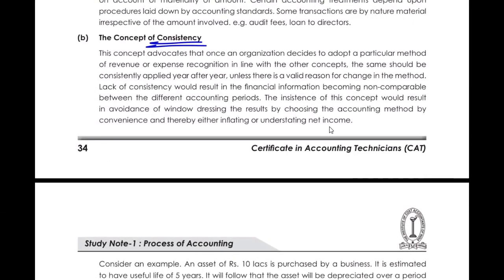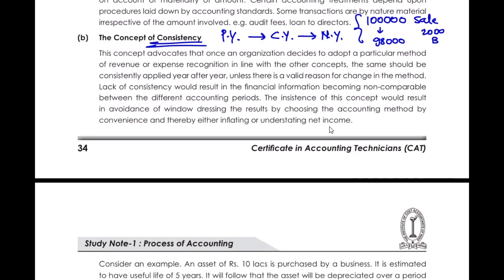The consistency concept says that whatever practice you followed in the previous year, you need to follow in the current year and the next year also. For example, from experience you always receive ₹98,000 from a sale of ₹1 lakh — so there is ₹2,000 of bad debt every year. You make a provision for bad debt of 2% of sales, which equals ₹2,000, and you apply this consistently.